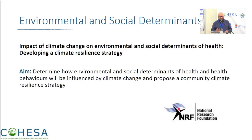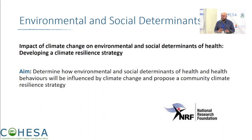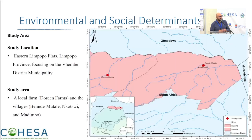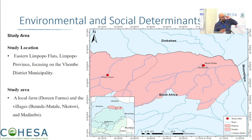One of the first projects — one we're almost nearing completion on — started by thinking about climate change: what are these environmental and social determinants of health in developing a climate resilience strategy at the community level? The area we're working in is right close to the Zimbabwean border and Mozambique, and the red dots are where our study sites are. What we tried to identify was, one, what are some of the environmental determinants of health that people self-identify.